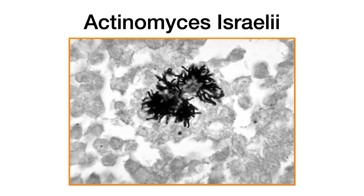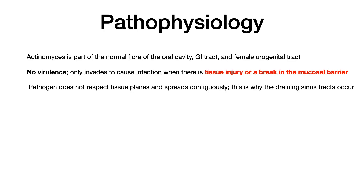Both Actinomyces israelii and Nocardia have branching filaments, so it will be the clinical manifestations as well as some subtle differences that differentiate these two. But Actinomyces israelii is one of the bacteria that have branching filaments.